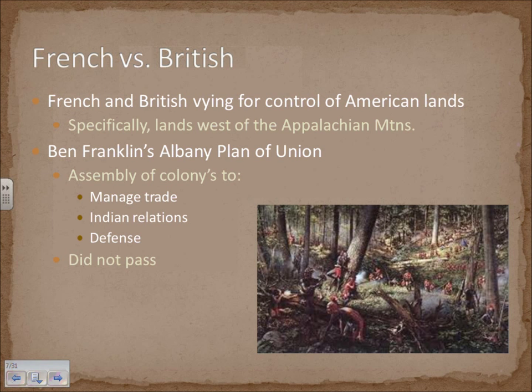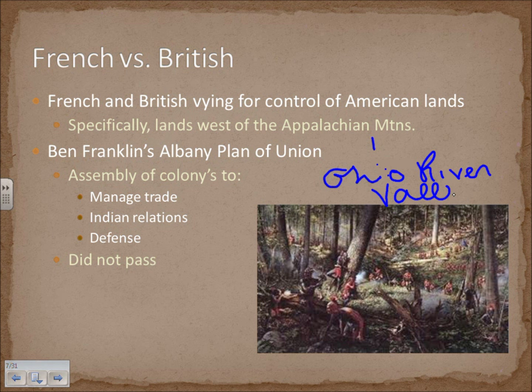Empires were competing for resources in North America — France, Spain, and England — but the main two were France and Great Britain. The French and British had been vying for control of American lands for a long time, specifically the lands west of the Appalachian Mountains known as the Ohio River Valley. This competition was driven by the need to expand, take new lands, and use their resources, as the system of mercantilism implied.